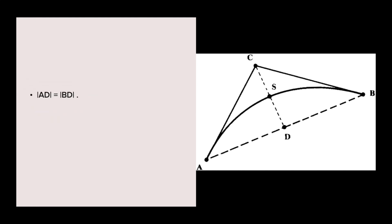To find the shoulder point S: draw a dotted line joining A and B, then identify its midpoint D such that AD equals BD. Then join C and D with a dotted line. From the formula rho equals DE divided by DC, we rearrange to get DS equals rho times DC. The shoulder point S can then be found by measuring along line DC starting at D by a distance equal to rho times the total length of DC. Once the shoulder point is found, the conic can be drawn through A, S, and B.